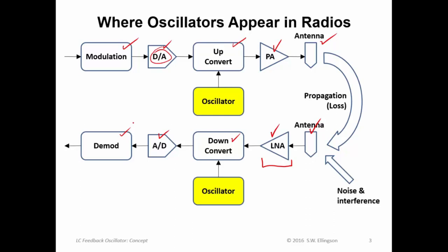Well to do the up conversion and the down conversion we require frequency mixing which will be the topic of a future lecture. And to do that we require an oscillator. So one prominent place where oscillators appear in radios is right here in these yellow blocks and they're used to do the conversion from higher to lower frequencies in receivers and lower to higher frequencies in transmitters. But that's not the only place they appear.